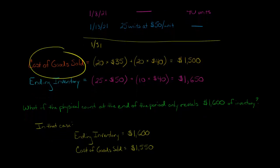So if that's the case, if we calculate cost of goods sold as $1,500 and ending inventory as $1,650, but then we see that we only have $1,600 of ending inventory, clearly we need to say, somehow we lost $50 of inventory.